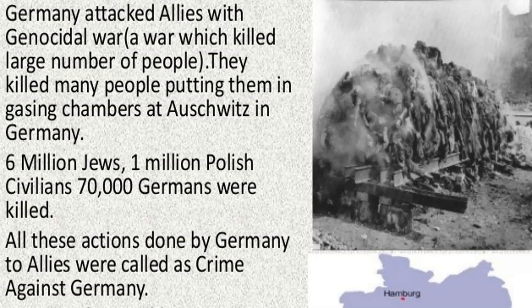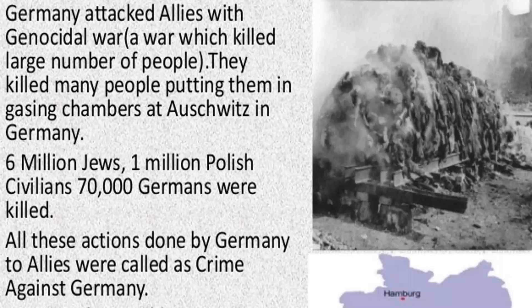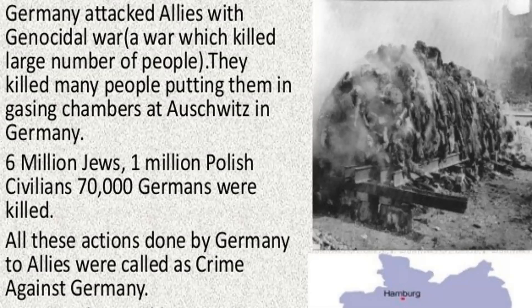The number of people killed includes 6 million Jews — approximately 60 lakh Jews were killed during that time. Around 2 lakh Gypsies, 10 lakh Polish civilians, and 70,000 Germans were also killed. Among the 70,000 Germans, the Nazis killed their own citizens who were mentally and physically disabled, during the period of 1939 to 1945.